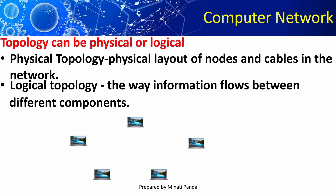Physical topology means the arrangements of all the nodes — that means where I am going to place all these nodes. Logical topology deals with the data flow in the network.